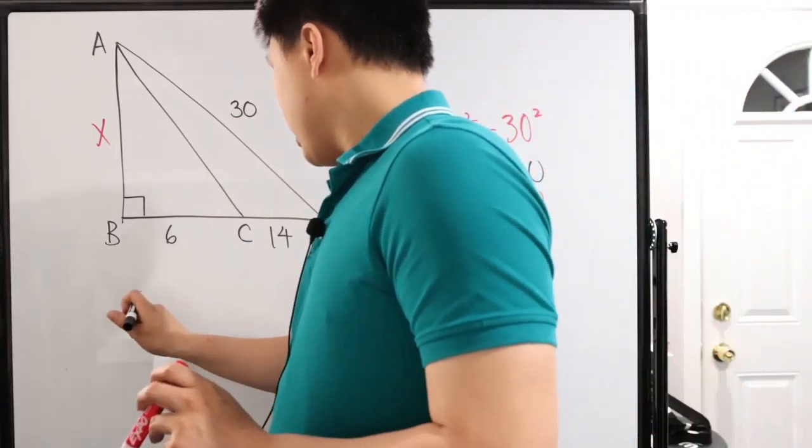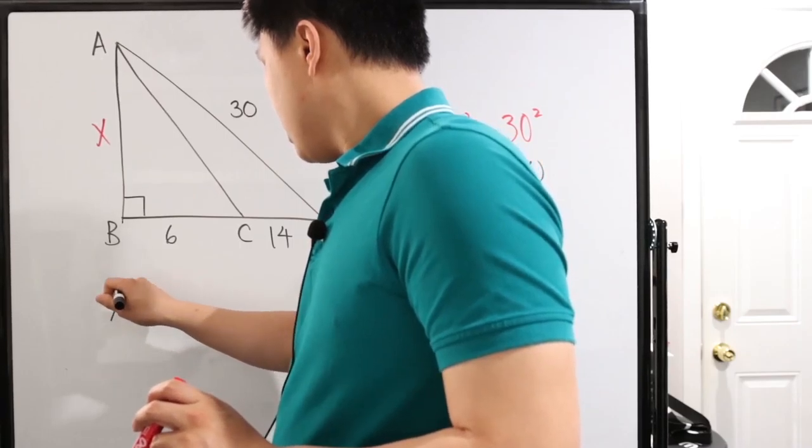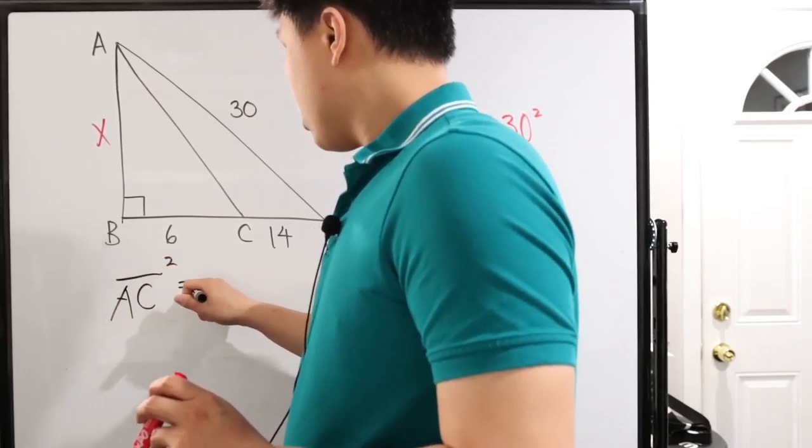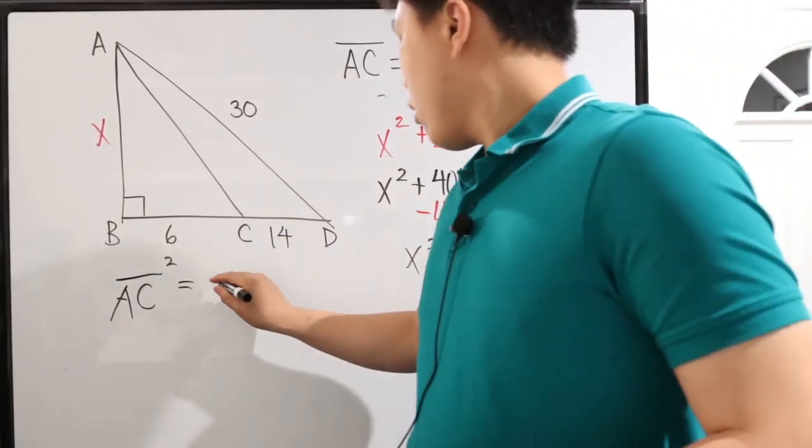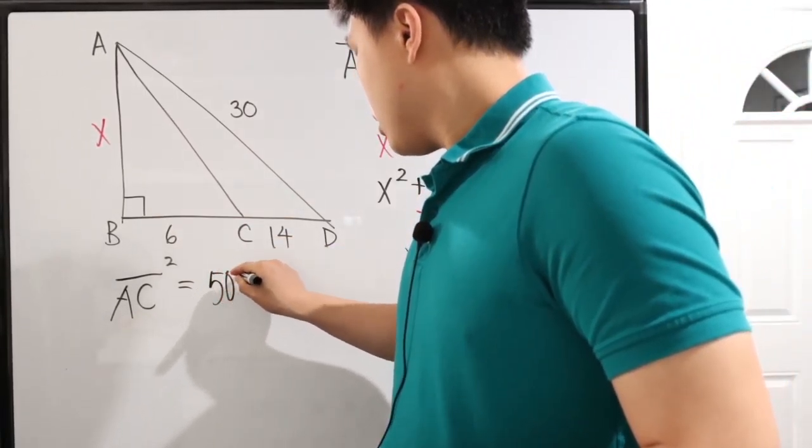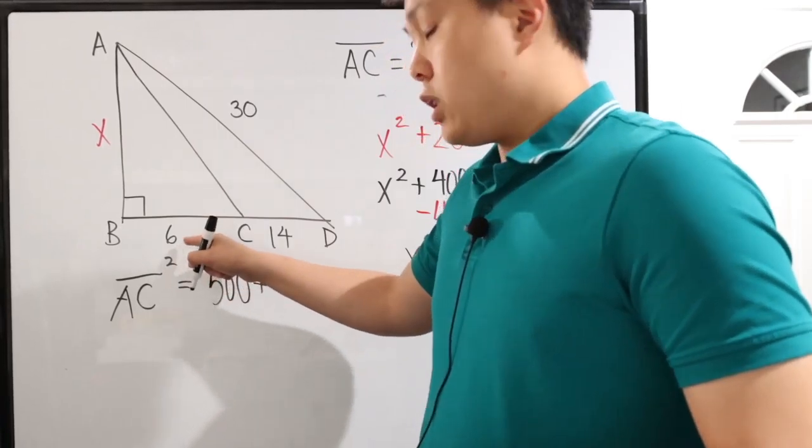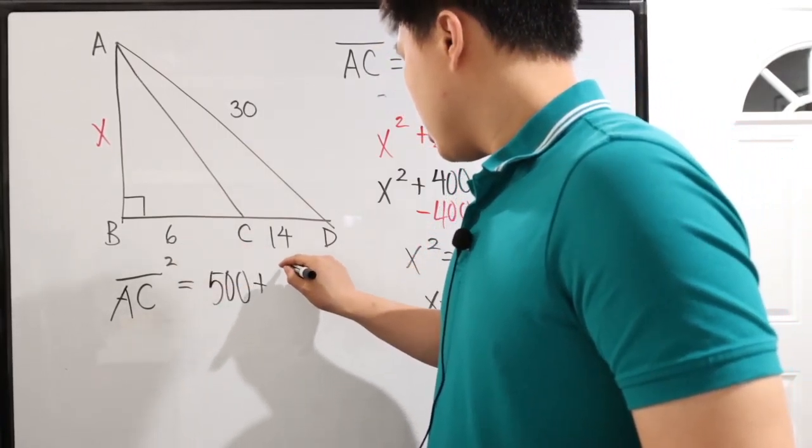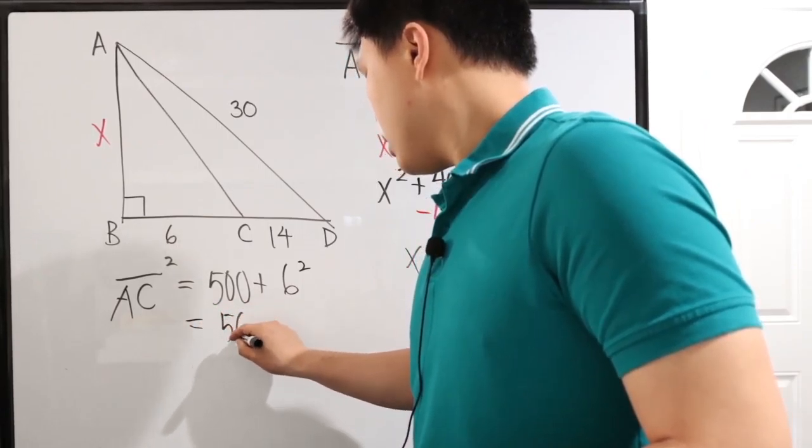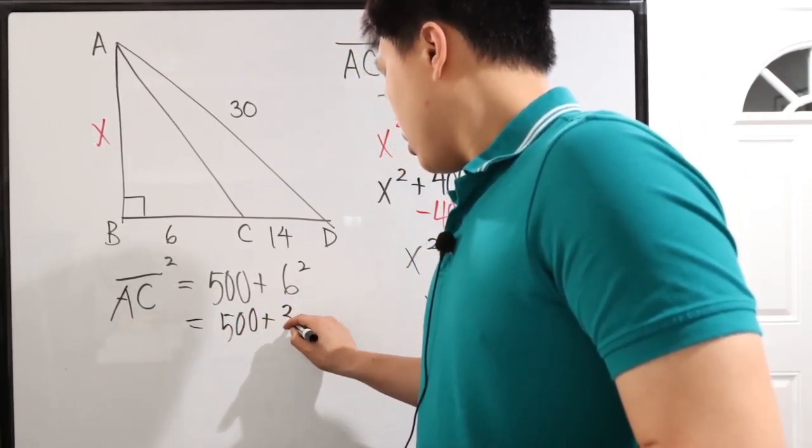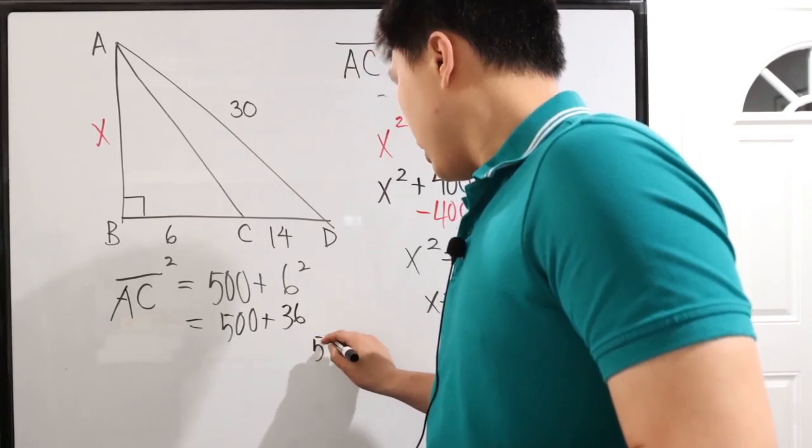What we know, I'm just going to move right here. AC squared equals X squared, which is 500 plus 6 squared, right? Which is, well, I'm just going to write 6 squared so you guys can see it. That's 500 plus 36. So 536,